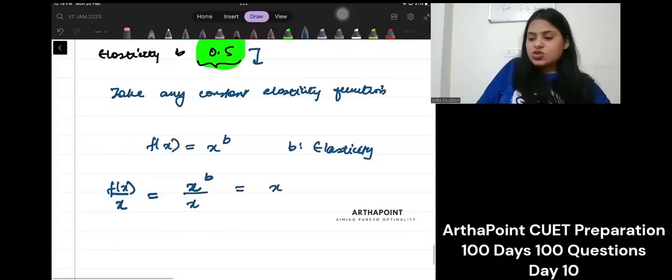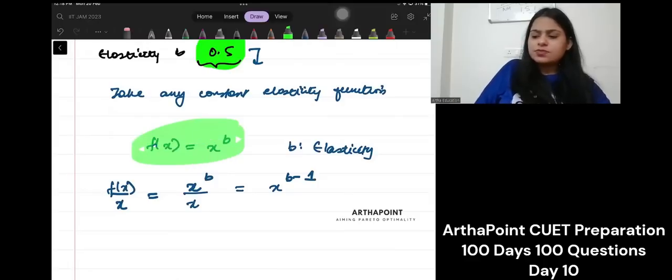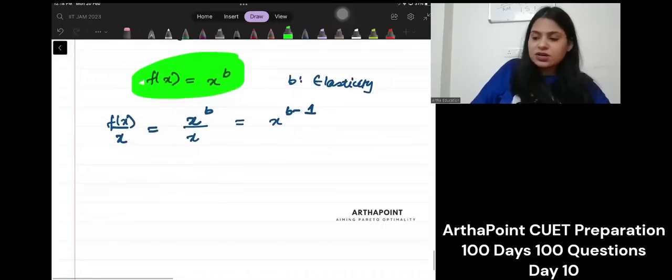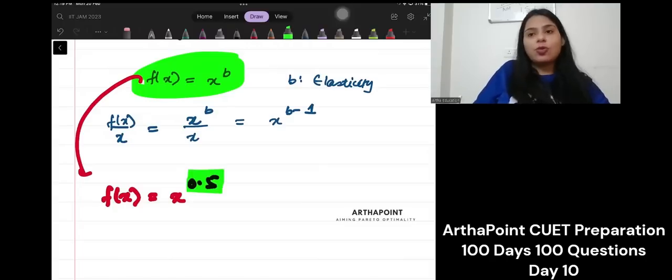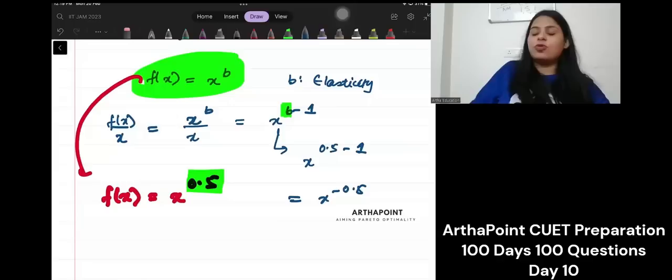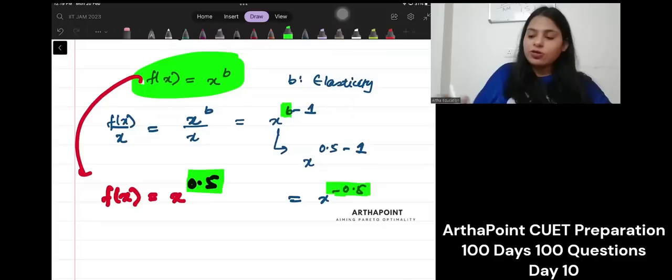Isn't it? What is elasticity given for this function? 0.5. So, from here, I know that my function is x to the power 0.5. So, the value of b is 0.5. Put the value of b here. What will you get? You will get x to the power 0.5 minus 1, x to the power minus 0.5. So, what is the new power? Minus 0.5. This becomes your elasticity.